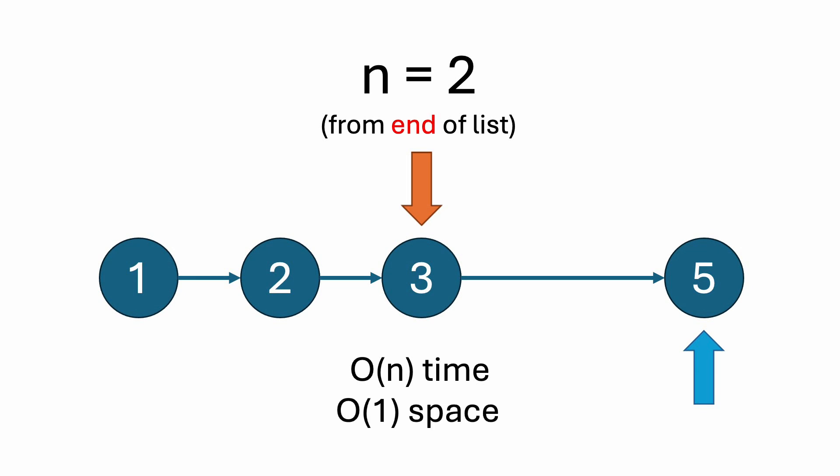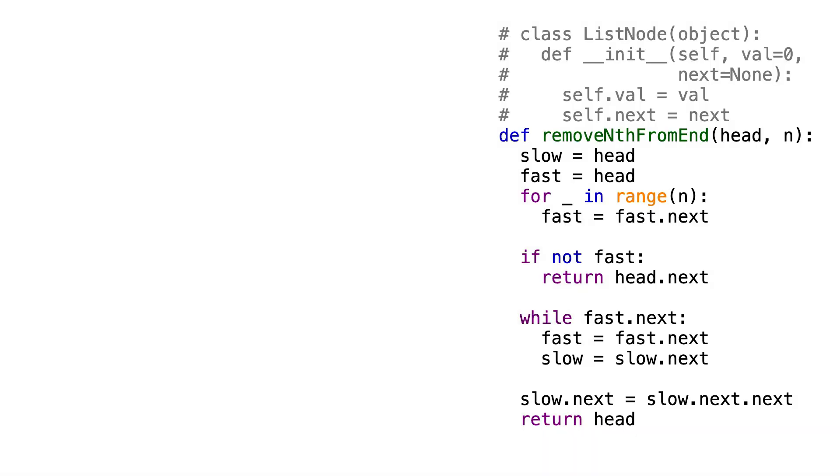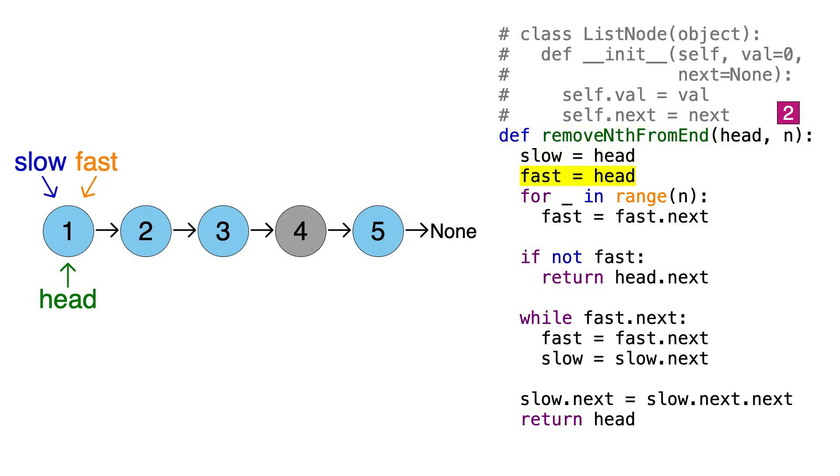Now let's look at the code and solve this in Python. Head will point to node number 1 in this linked list, and let's use n equals 2 again, so we need to remove node 4. The first thing we'll do is create our two extra pointers, and we'll call them slow and fast, and point them both to the head node.